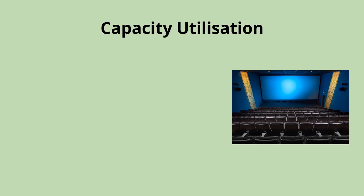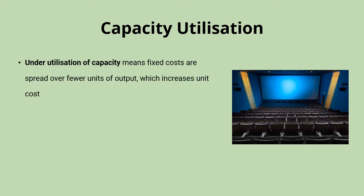Most businesses look to operate at relatively high levels of capacity utilisation. If their capacity utilisation is too low — an under-utilisation of capacity — their fixed costs will be spread over fewer units of output, which means their cost per unit will be driven up. Fixed costs are costs that do not change depending on output. Think about that cinema: it still has to pay its rent, electricity, and most of its labour costs, whether it sells one ticket or 500 tickets. A higher level of capacity utilisation means the cost per unit is lower, which is key for making a profit on each sale.